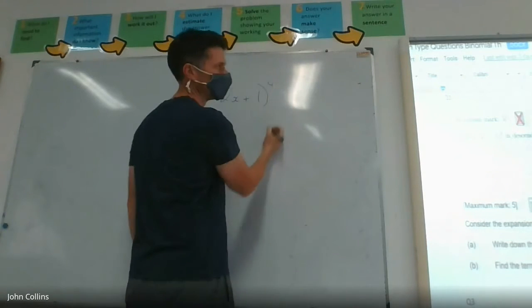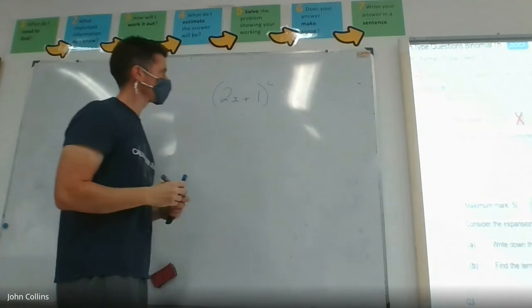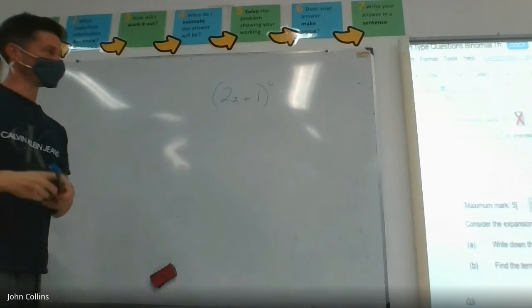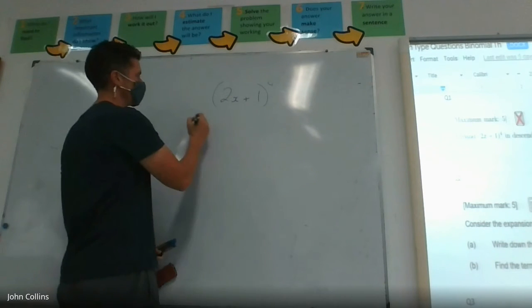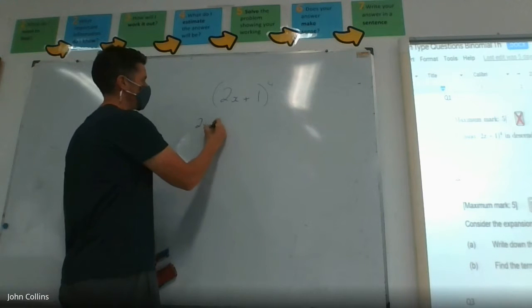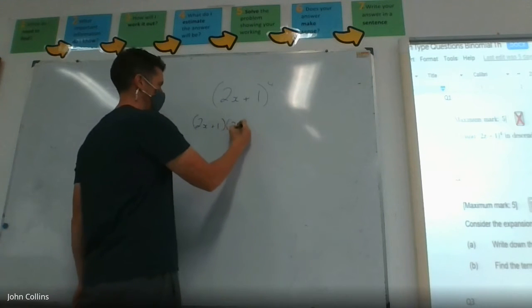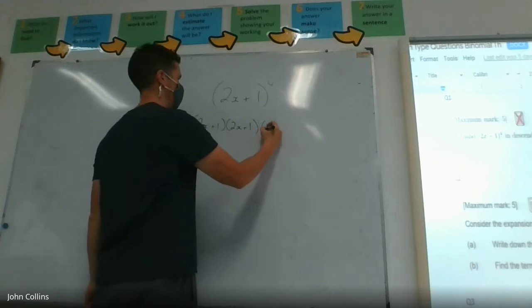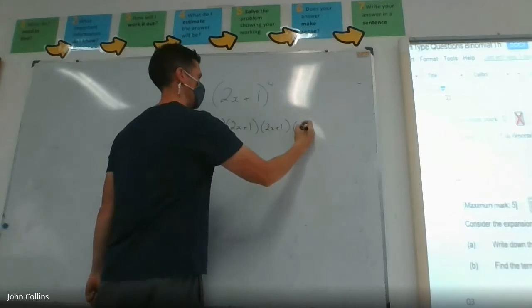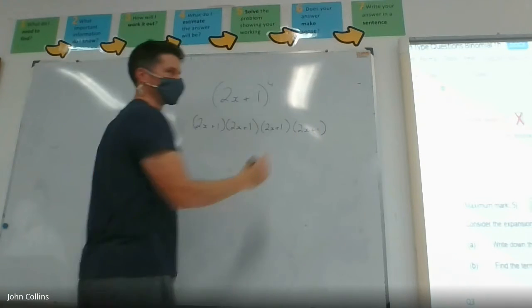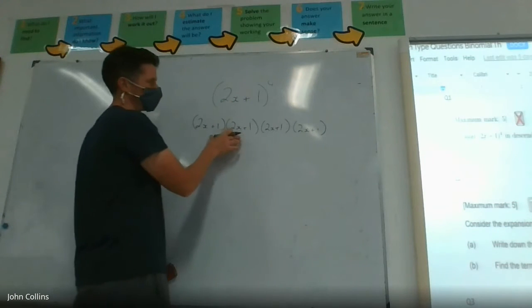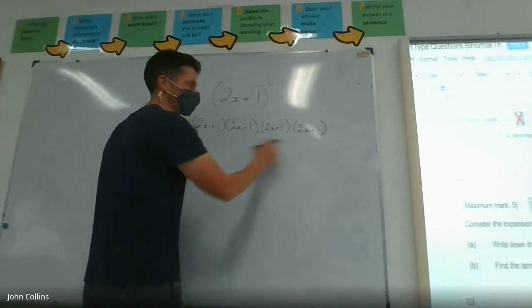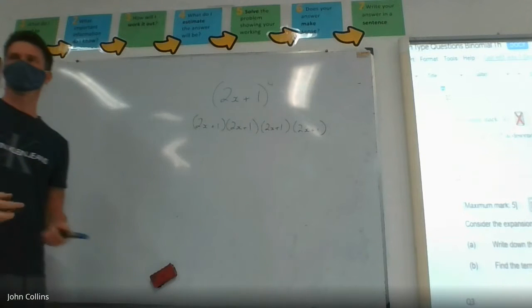To the 4, descendant powers of x. Now if you forget the Binomial Theorem in an exam, you can always go, okay, 2x plus 1 times 2x plus 1 times 2x plus 1. Now it's a verb back to just multiplying. Like first two brackets first, and then multiply that answer by this, and then multiply that answer by that, and you'll get the same answer.